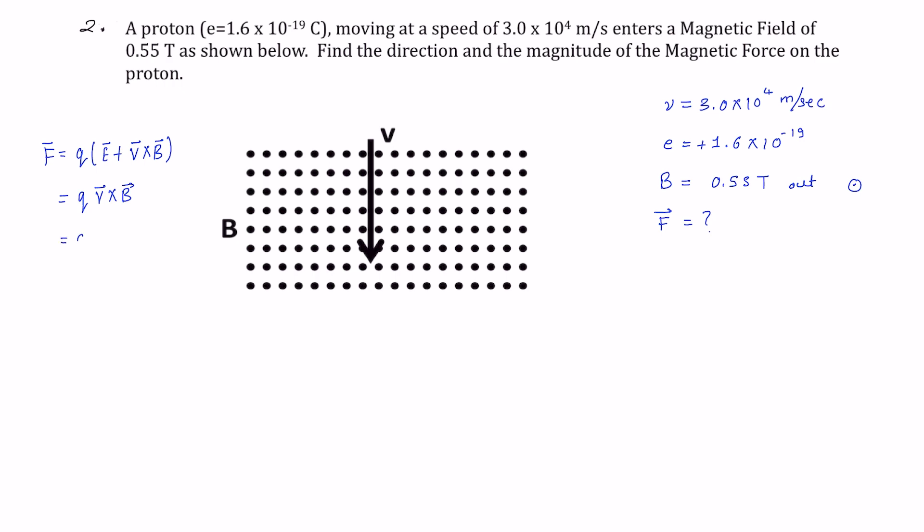So we have Q, V, B sin theta, and sin 90 is 1, so this will be just Q, V, B, and that will be the force.